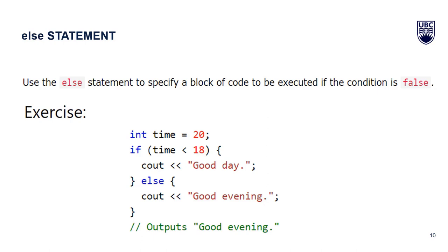Let's understand the else statement through this example. We are given a value of time, and based on this value we print something on screen. If time is less than 18, we print 'good day'. If time is greater than or equal to 18, we print 'good evening'. Here, time equals 20. Checking the condition: is 20 less than 18? No, so this condition is false. Therefore we execute the code in the else bracket and print 'good evening' on the screen.